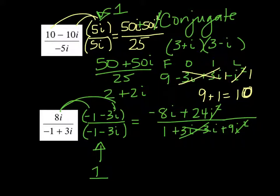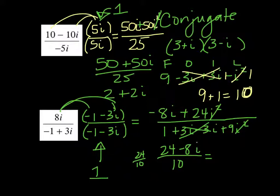And we end up with 24 minus 8i in the numerator over 1 plus 9, which is 10. This simplifies to 24 over 10, which would be, divide them both by 2, which would be 12 over 5. My cell phone's ringing. I'm almost done. 8 over 10 would be 4 over 5. And then tack on the i. Sorry about that. Had to talk to my kid's dentist on the phone.